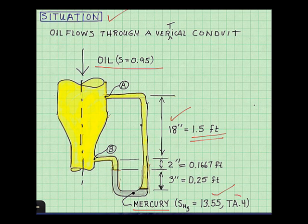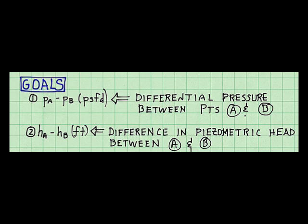I documented the problem goals like this. Notice the units here. This means pounds per square foot differential, and it's kind of uncommon to see this, but it's used sometimes in practice. So the two goals are the differential pressure and the difference in piezometric head.